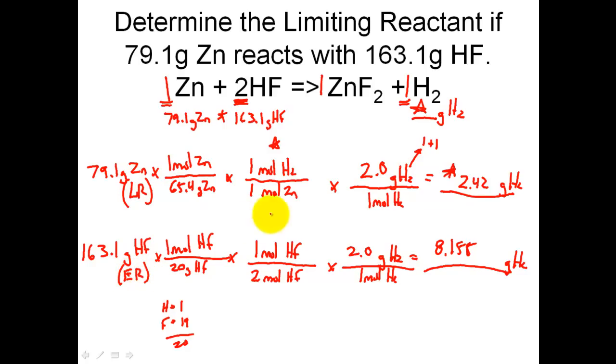Once again, once the reaction produces 2.42 grams of H2, the reaction is over. So what that means is that HF does not have the possibility of producing all of this, because it needs zinc in order to do that, and zinc will run itself out. All right guys, that's just a quick example on how to determine the limiting reactant given an equation with two reactants. Hope it was helpful. Tune in again. Later.